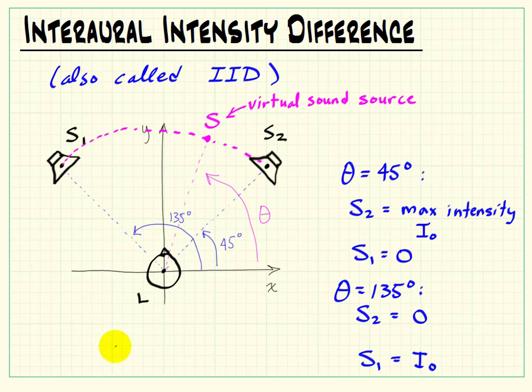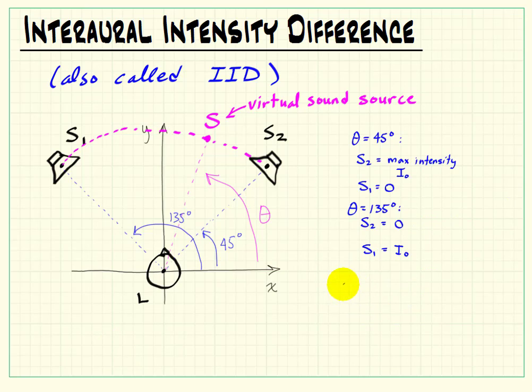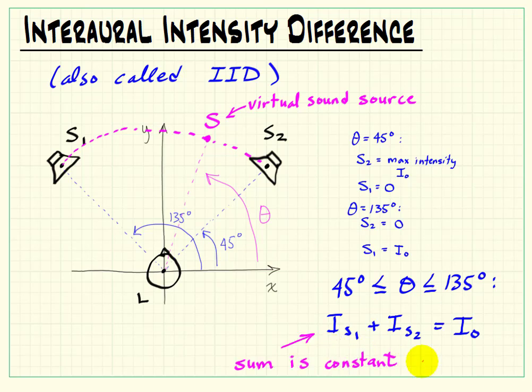Now we consider theta as being something that we can continuously adjust between 45 degrees and 135 degrees. And we'd like to have the impression that the virtual sound source always has a given intensity. So we can think of this being stated mathematically as that the intensity produced by speaker 1 plus the intensity produced by speaker 2 must be a constant, and that will be our intensity I naught. Anywhere in between, we need to perceive that same intensity. So we see that the sum of the intensities is a constant.